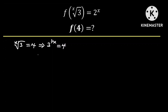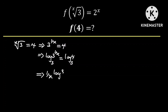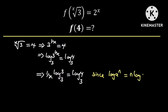And if we take logs from both sides to the base 3, we are going to obtain the log of 3 raised to the power of 1 over x to the base 3, which will be equal to the log of 4 to the base 3. This implies that 1 over x times the log of 3 to the base 3 is equal to the log of 4 to the base 3, since the log of a to the power n is equal to n times the log of a.